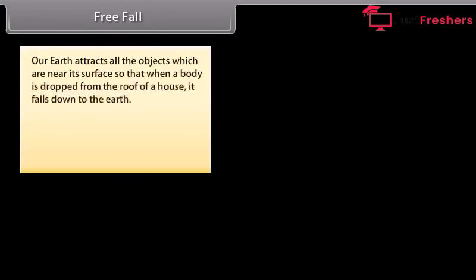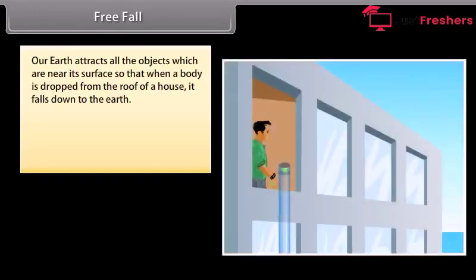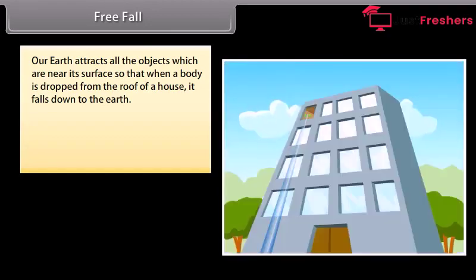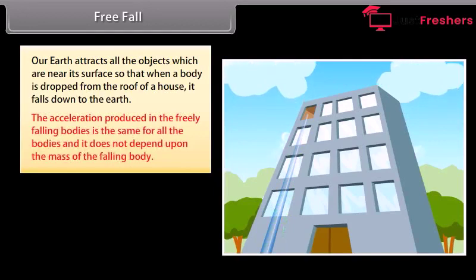Free fall: The earth attracts all objects near its surface, so when a body is dropped from the roof of a house it falls down to the earth. The acceleration produced in freely falling bodies is the same for all bodies and does not depend upon the mass of the falling body.